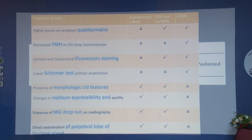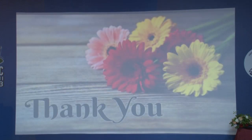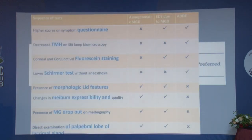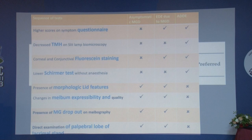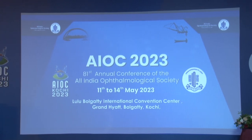As a take-home, here is the correct sequence of examination. First, take a good history using questionnaires like the OSDI. Second, assess tear meniscus height on the slit lamp. Third, fluorescein staining of the cornea — and for the conjunctiva, use rose bengal rather than fluorescein, as it is much better. Then perform Schirmer's test. Next, assess lid features, meibum expressibility and quality. After that, check for meibomian gland dropout by everting the lids. We should not touch the lids until after Schirmer's, TBUT, and other tear tests. Finally, assess the palpebral lobe of the lacrimal gland.